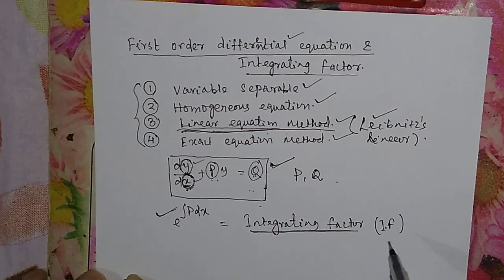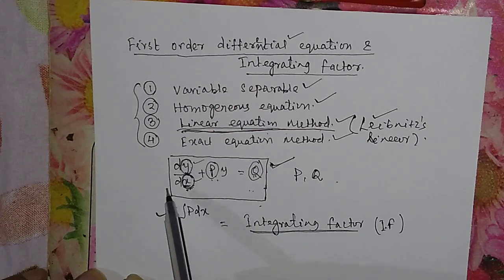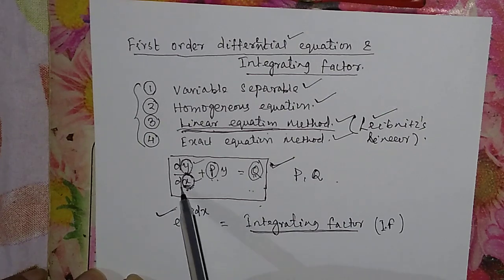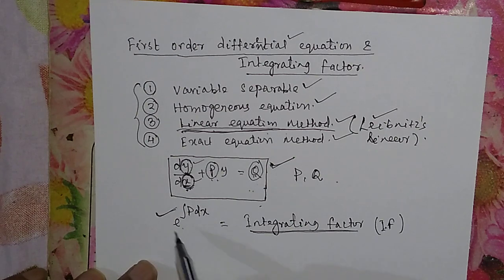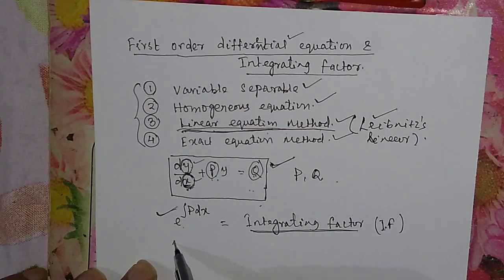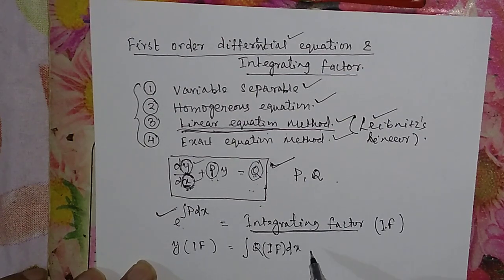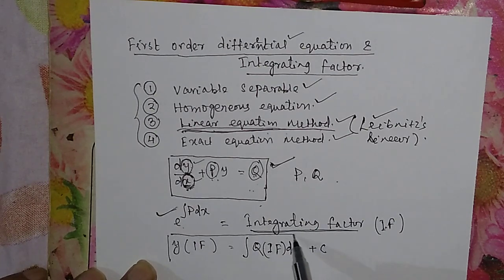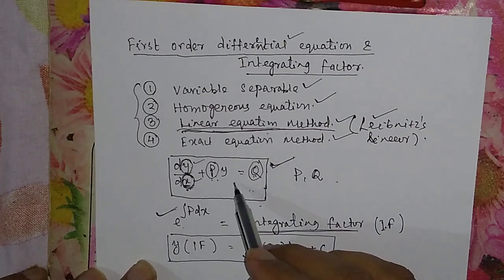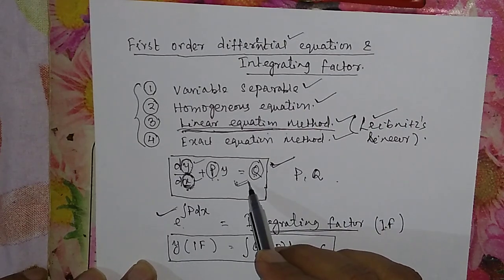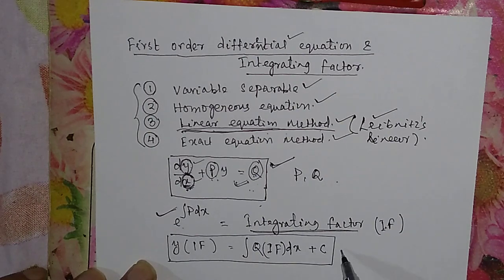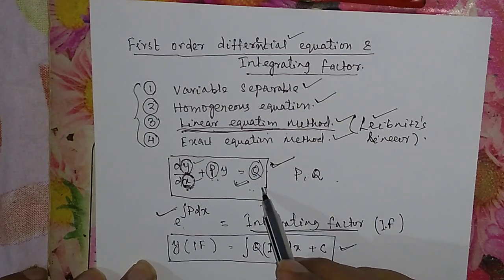We must remember this integrating factor: e to the power of the integral of P dx. If you multiply the integrating factor on both sides of the differential equation, then the solution will be y times the integrating factor equals the integral of Q times the integrating factor dx, plus C.